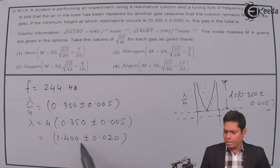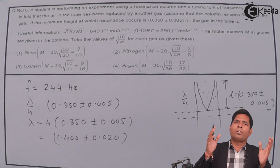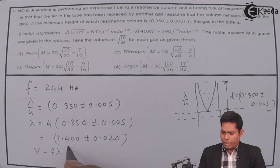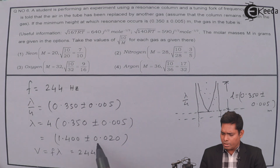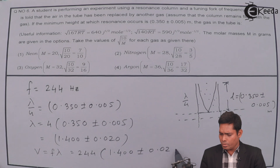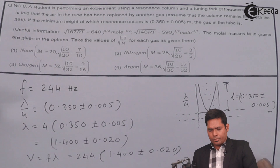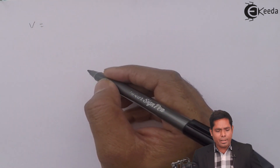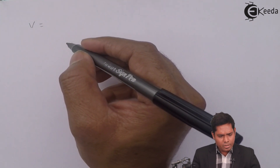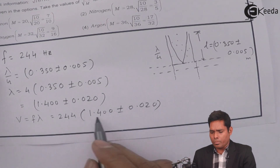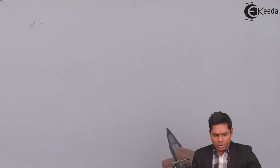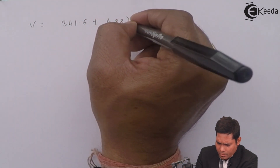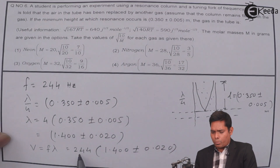The wavelength is known and the frequency is known, so the velocity of sound equals frequency times wavelength: 244 × (1.400 ± 0.020). Multiplying those two gives the velocity as 341.6 ± 4.88 meters per second. This is the value we get from the experiment.